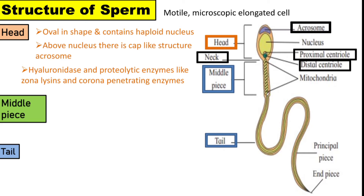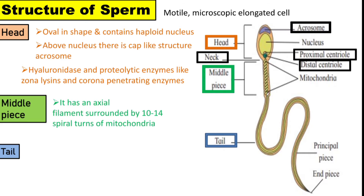The middle piece has an axial filament surrounded by 10 to 14 spiral turns of mitochondria. It produces the energy necessary for the movement of sperm.